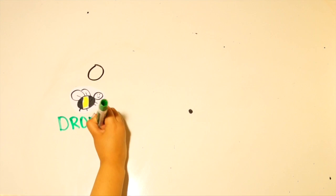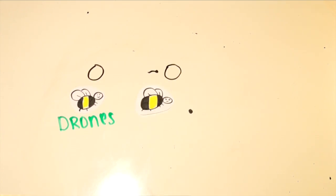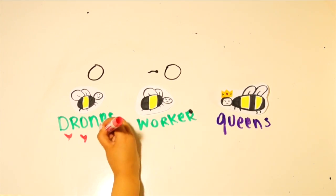These unfertilized eggs develop into male bees, also known as drone bees. Some of the queen's eggs are fertilized and they turn into female bees, either worker bees or queen bees.